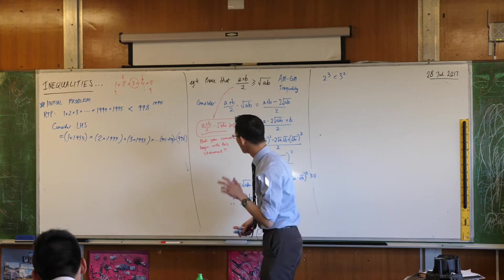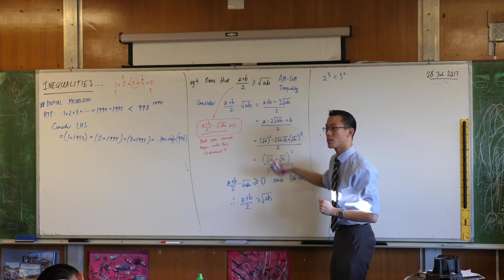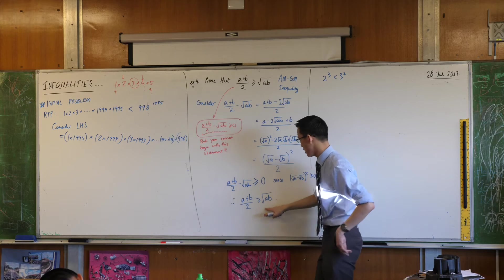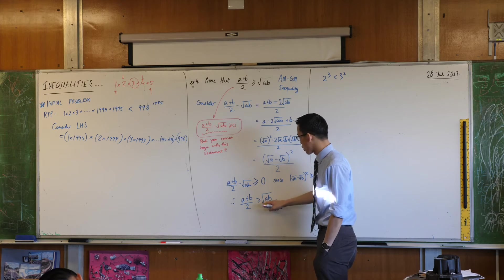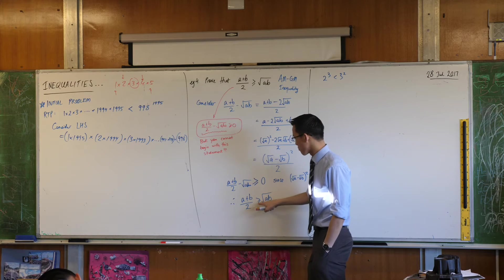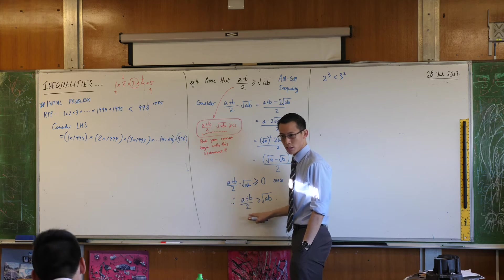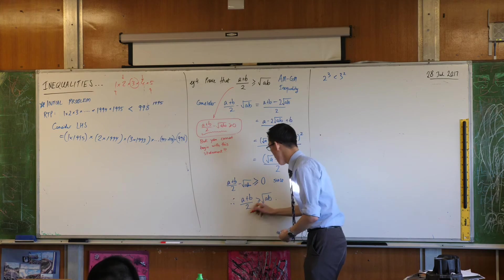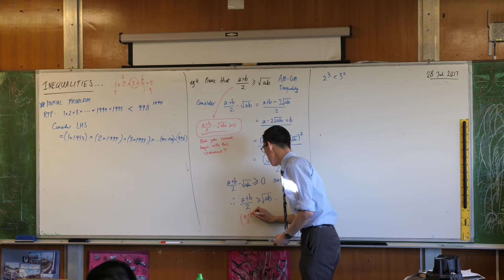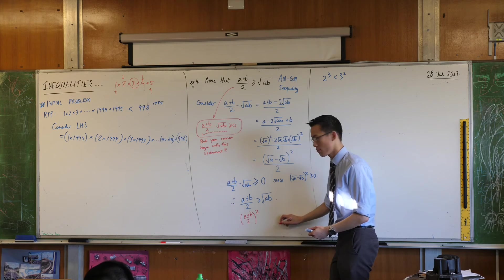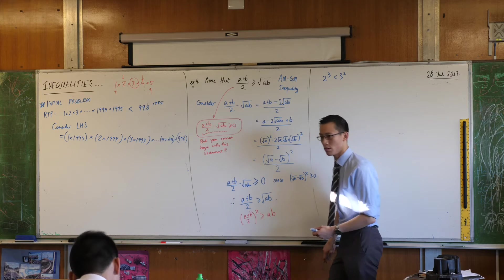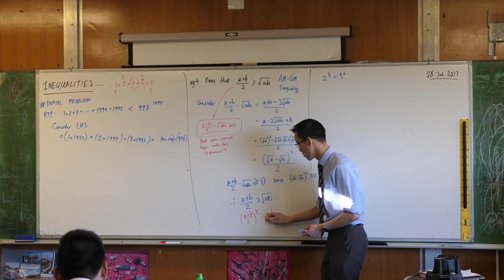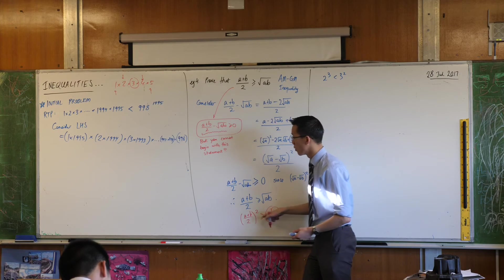So what we've done is we've broken up this long product into a bunch of pairs that are easier to deal with. Now I'm going to use some logic from the immediately previous example that I showed you. Have a look at this. This is telling us here that the square root of a product is always less than or equal to this thing over here. Well, if you go back again another example, you can see from this, I could square both sides like that, and that would be less than this. Do you agree?